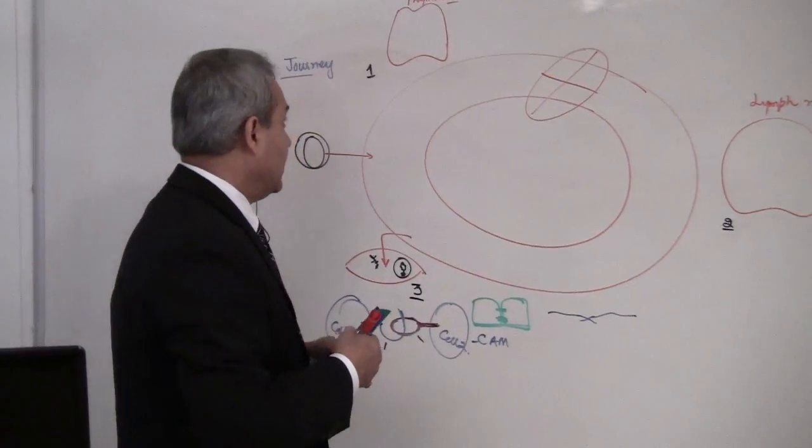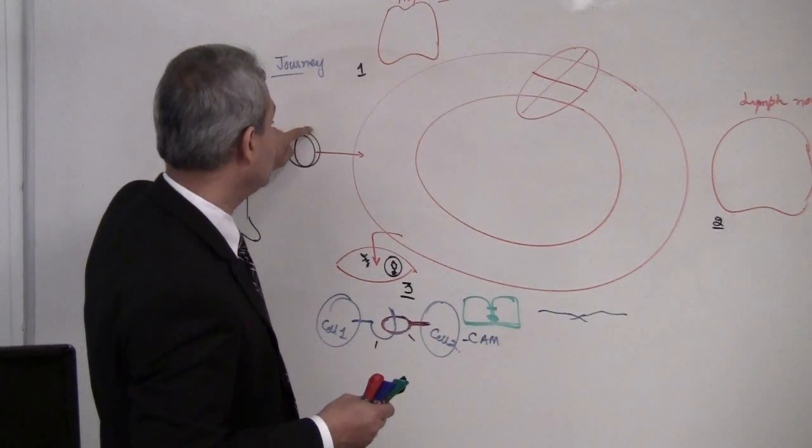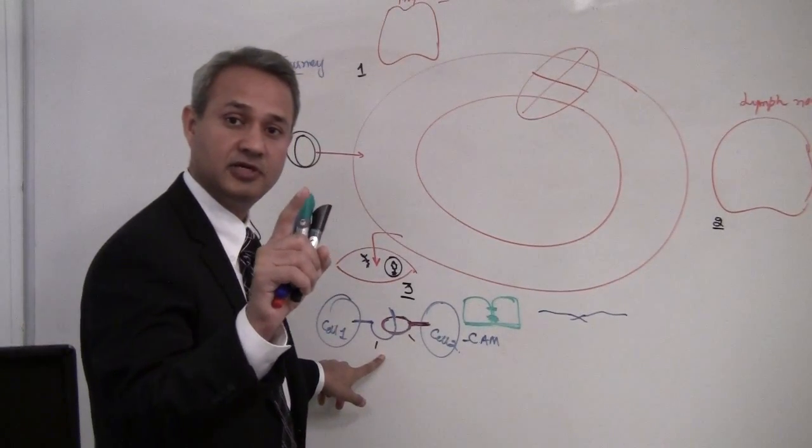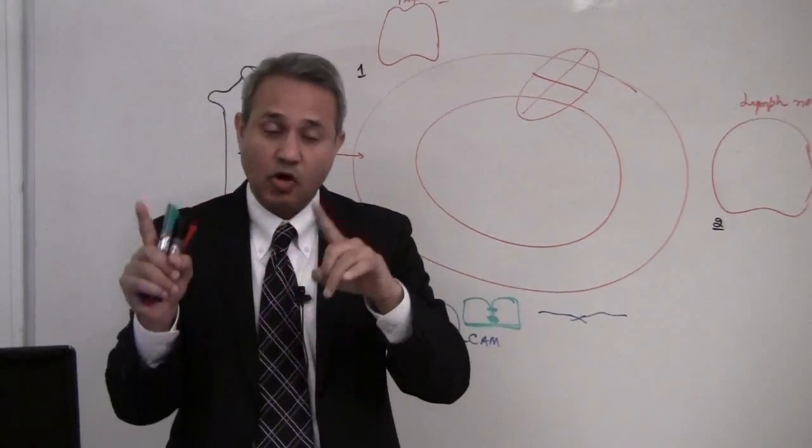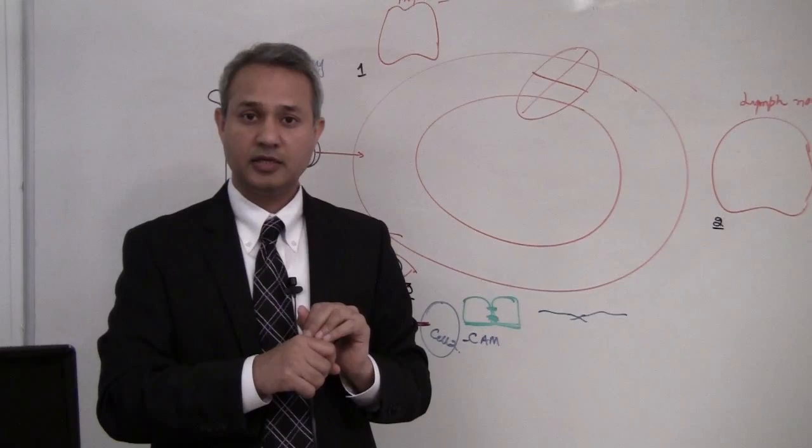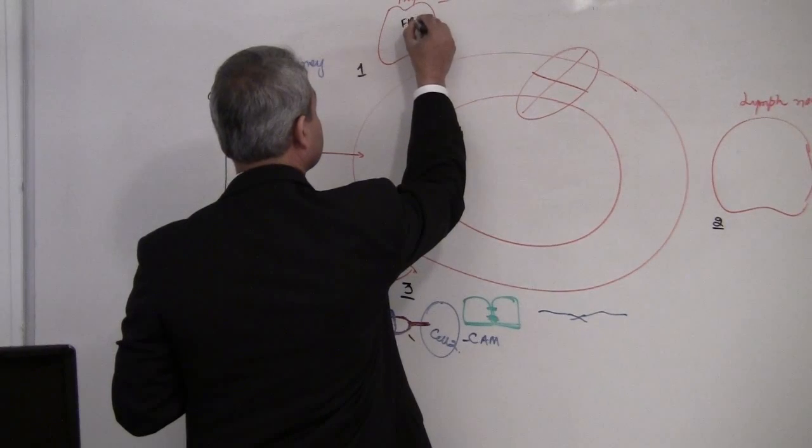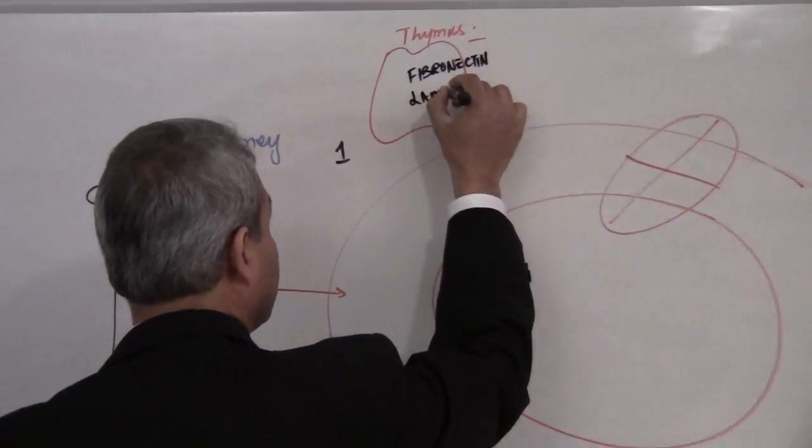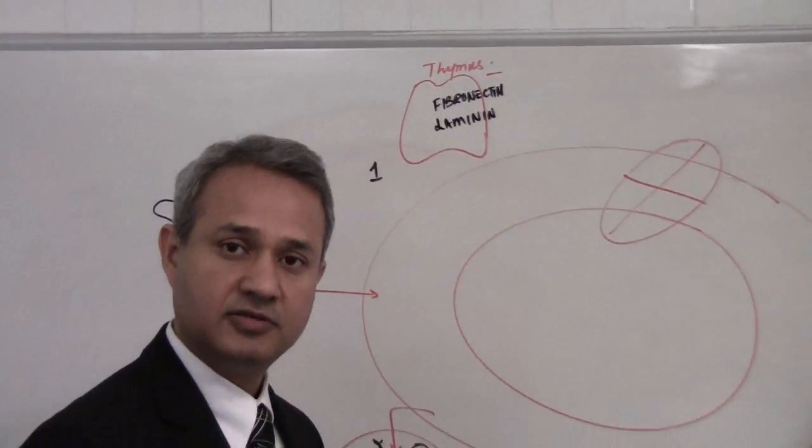When a newborn T cell is produced, it expresses the proteins on its surface or it expresses the ligands on its surface which are only specific for thymus cells. That means thymus cells in turn also express some proteins which are only specific to them. For example, in this case, what would that be? So fibronectin and laminin of thymus. So these are extracellular matrix proteins, very common, they are present all over the body. The fibronectin and laminin of the thymus connect with...